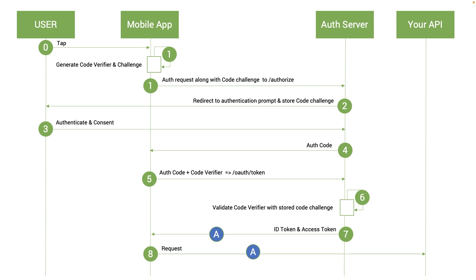Once validated, the access token and ID token are returned. You can then request any API with this access token, and if the authorization server validates it, you receive a response. Although this seems like a simple process, it gives us a very high security assurance between the native client app and the authorization server.